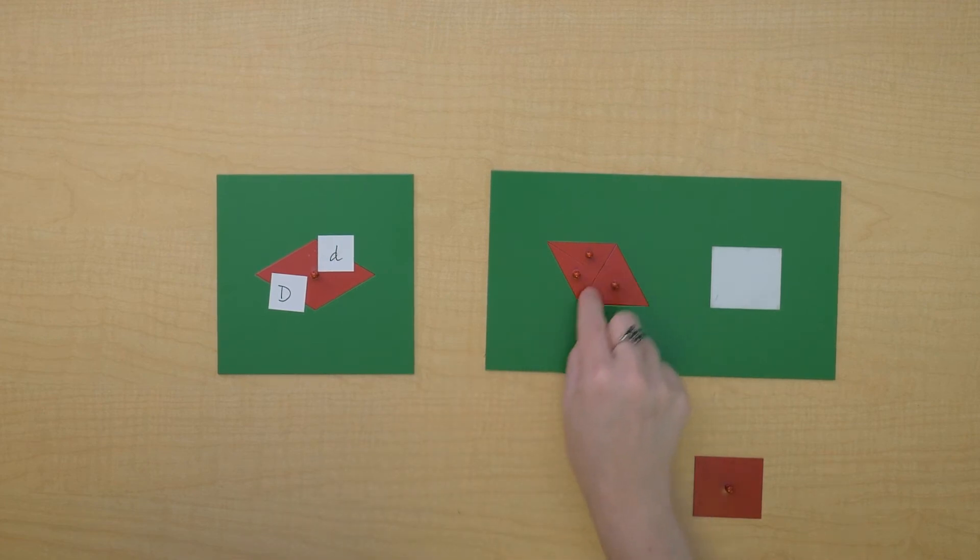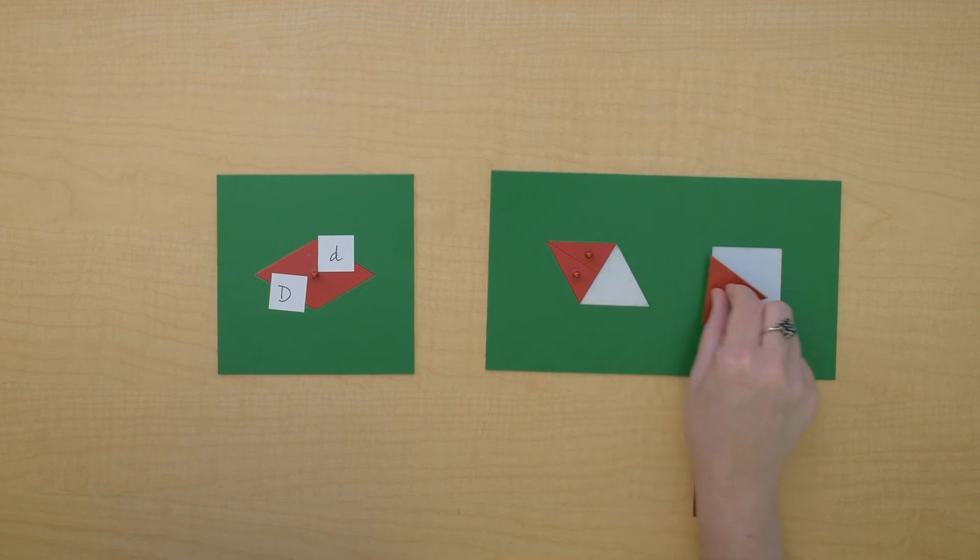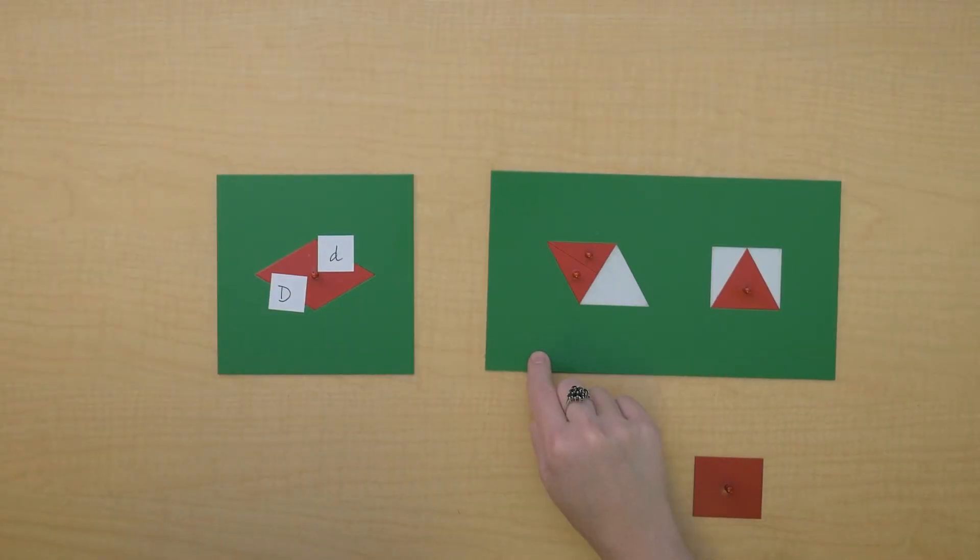So I'm going to move this triangle over. Oh, look at that. That minor diagonal became the base.